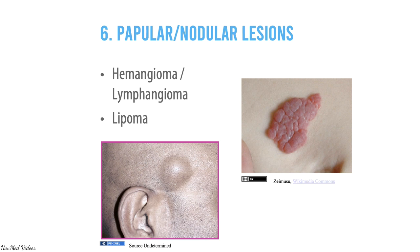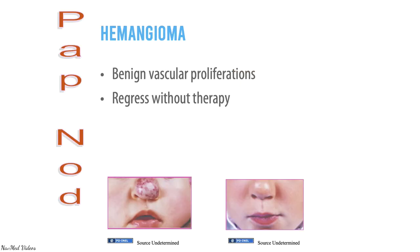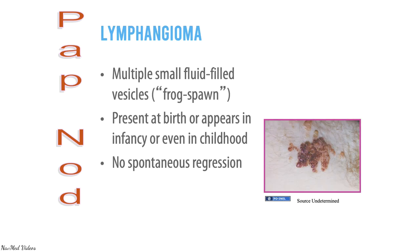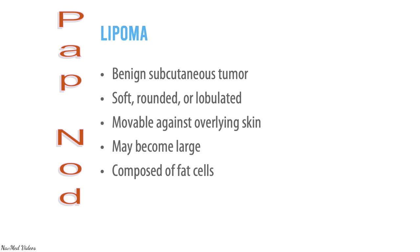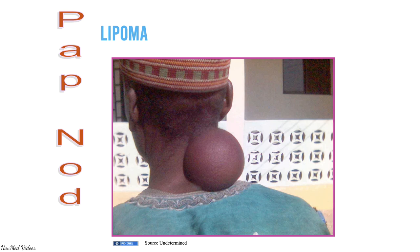Papular and nodular lesions of the skin include hemangiomas, lymphangiomas, and lipomas. Hemangioma is a benign vascular proliferation that regresses without therapy. Lymphangioma presents as multiple small fluid-filled vesicles present at birth or appearing in infancy or childhood, with no spontaneous regression. Lipoma is a benign subcutaneous tumor that is soft, rounded or lobulated, movable against the overlying skin, may become large, and is composed of fat cells.